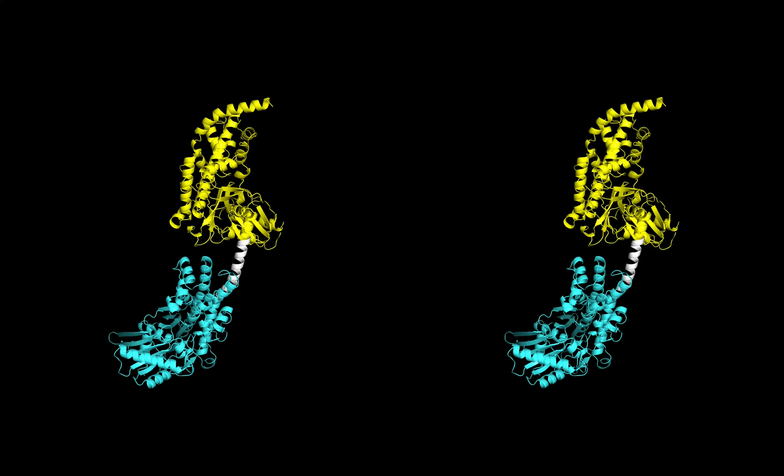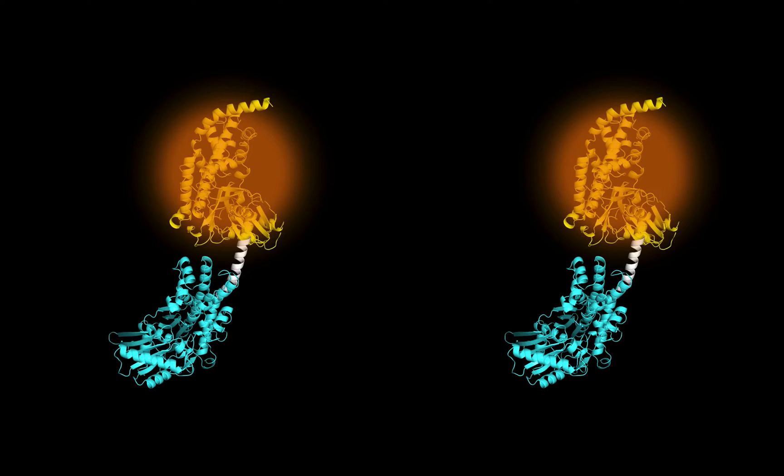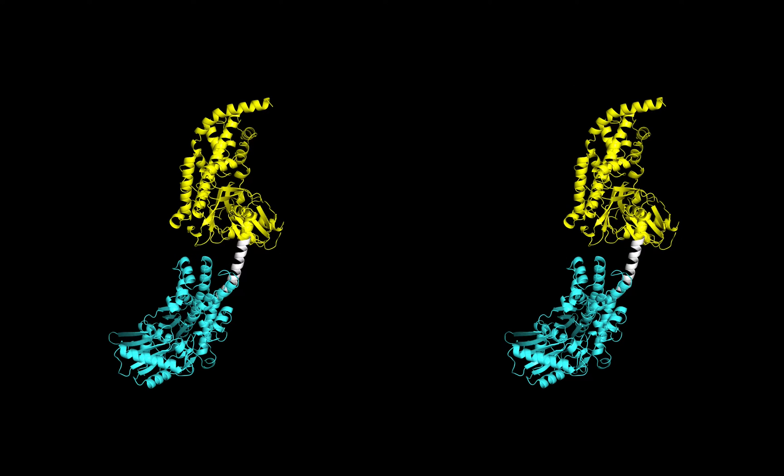The C-terminal unit, which I've colored cyan, performs catalysis, and the yellow N-terminal piece binds the product of the reaction, G6P.